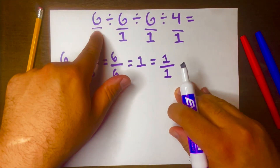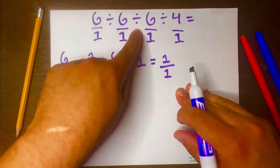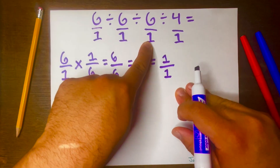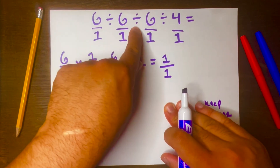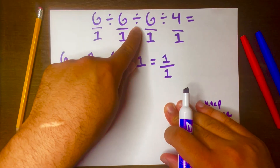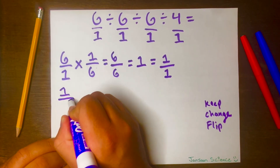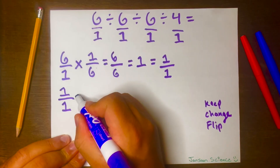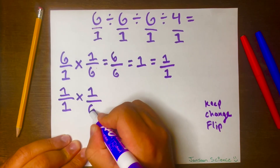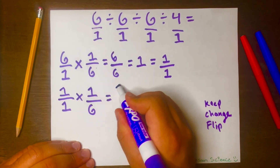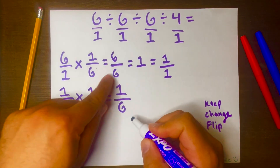Now that we got that part done, we have a new part. We look at this part — 1 over 1 — and divide it by the third part using the keep-change-flip method again. We'll keep 1 over 1, change the division to multiplication, and then flip 6 over 1 to get 1 over 6. Multiplying across: 1 times 1 is 1, and 1 times 6 is 6, giving us 1 over 6.